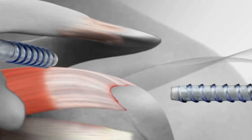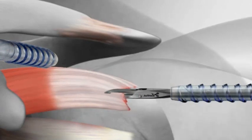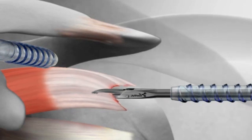The surgeon begins by identifying the tear in the rotator cuff tendon. The cuff is brought over to its original attachment site to ensure that the repair can be completed without tension.